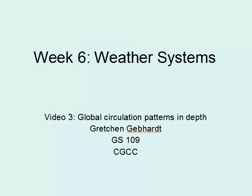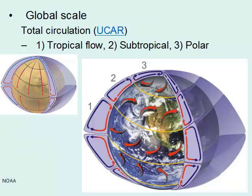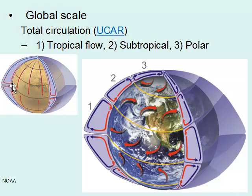Welcome back to week six. In video three we're going to delve into some of the details of global circulation patterns. Like we talked about last week, if we had a non-spinning earth with one cell, you would see that air would be rising at the equator and then sinking at the poles, with air flow on the surface just moving from the poles to the equator and then back up. Pretty simple pattern, but the earth is not that simple.